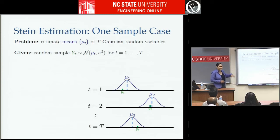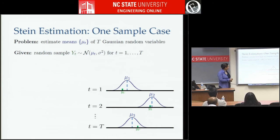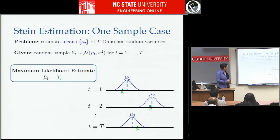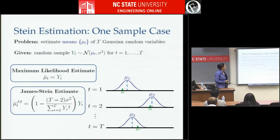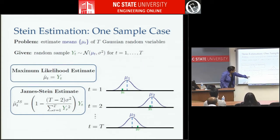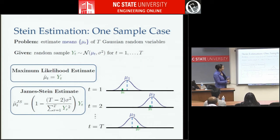I'll walk you through the one-sample case. The problem is estimating the means of T Gaussian random variables, which can be independent. We draw a random sample from each Gaussian and assume for the moment we know the standard deviation. With just one sample per distribution, the maximum likelihood estimate for the mean is just that one sample — the best you can do in the single-task case.